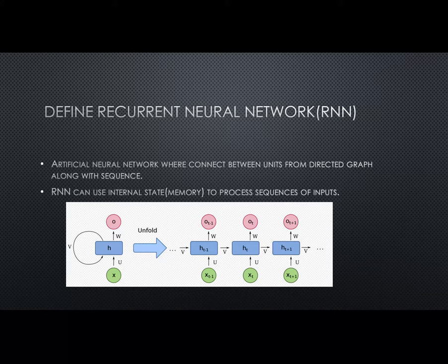We're going to see what is recurrent neural network. Recurrent neural network is an artificial neural network where connections between units form a directed graph along with the sequence. Recurrent neural network can use internal state, what we call memory, to process the sequence of the output.